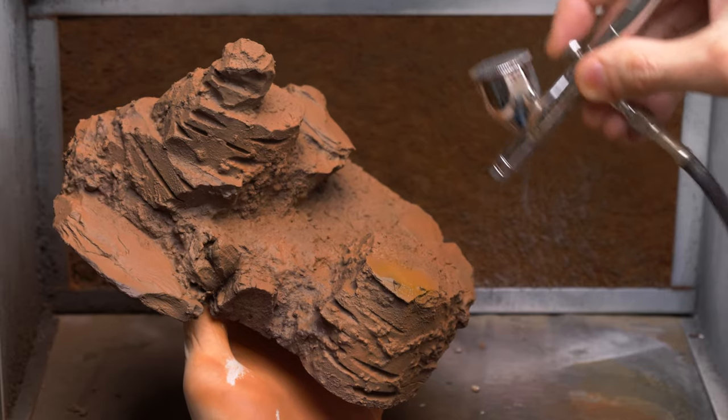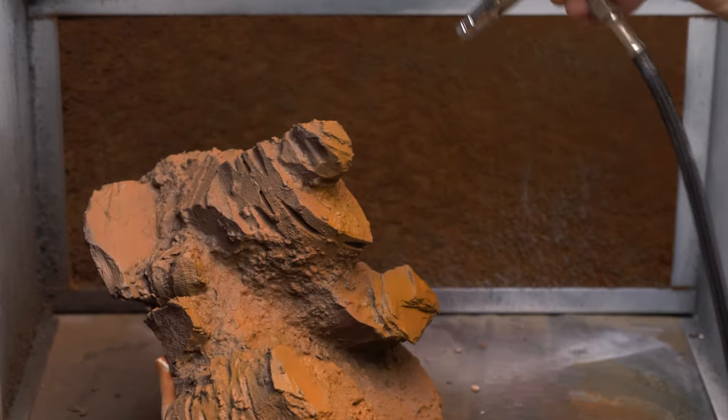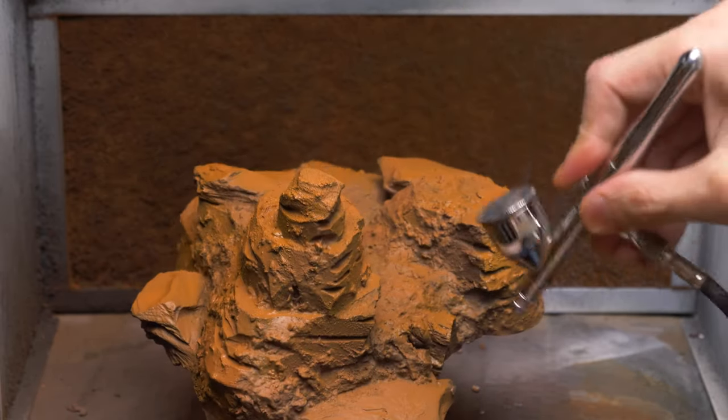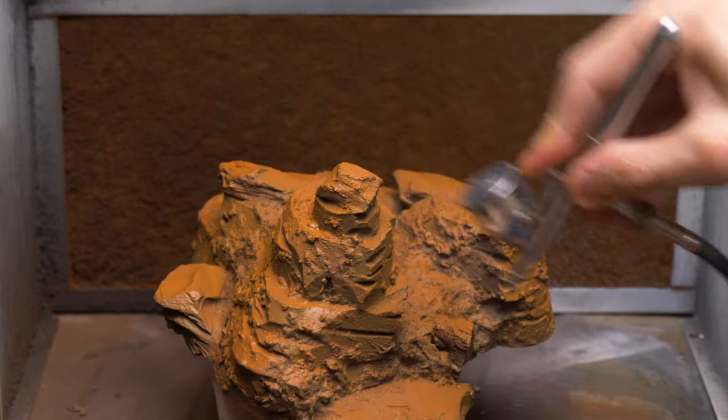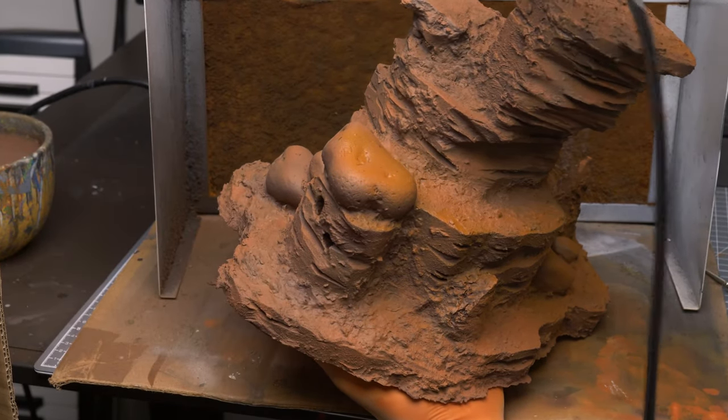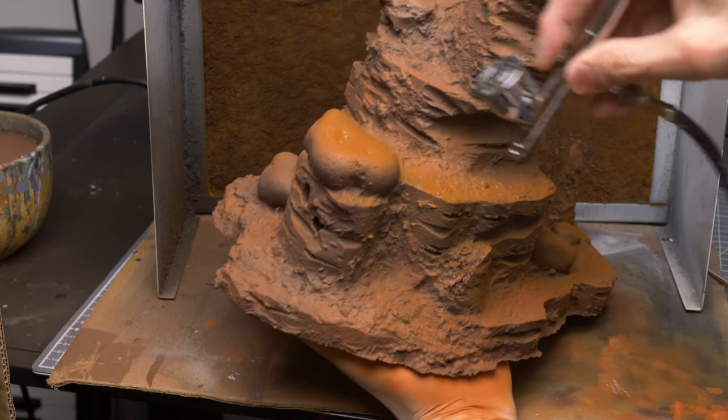I'm now applying the more vibrant orange rust more or less directly from above. This gives us some quite effective zenithal highlights, along with some attractive variations of hue.